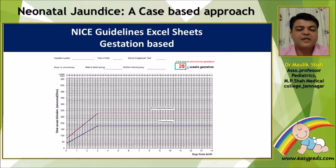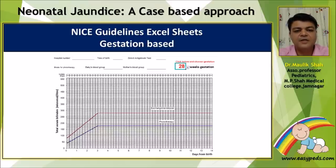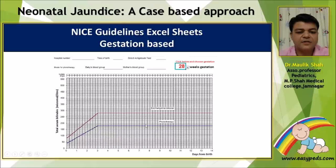The NICE guidelines have been followed in the UK. They provide a nice Excel sheet in which you enter all the data of the baby including gestation. According to the gestation entered, a chart is generated with two different lines — the lower line for phototherapy and the upper line for exchange transfusion — meaning gestation-based criteria are used by NICE guidelines for premature babies.